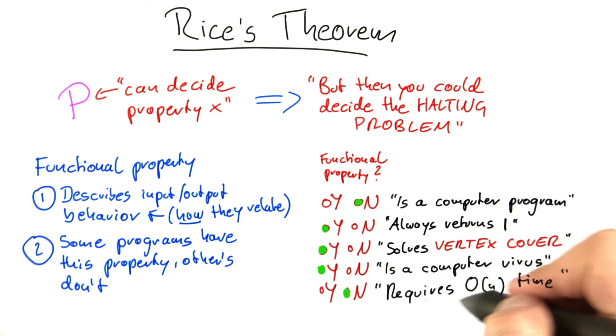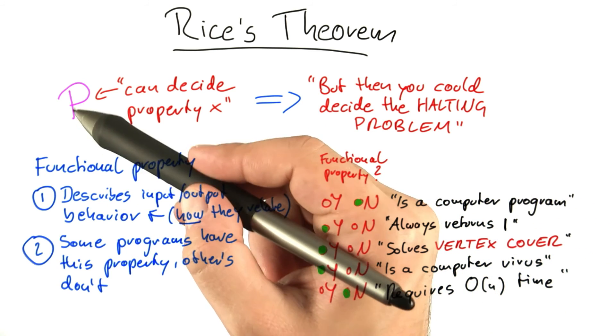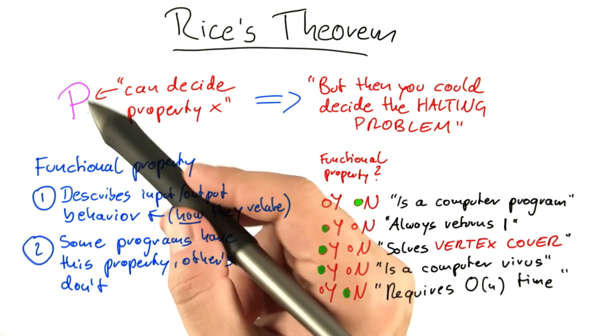This is something that is a little more tricky to figure out. But basically, any time that you ask can a program do X, that will be a functional property that you're asking for, at least in almost any of the cases.